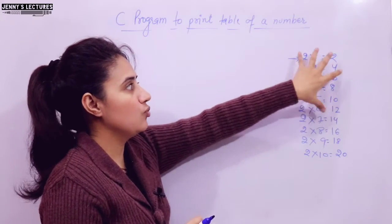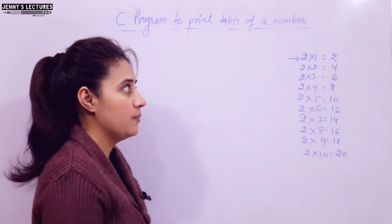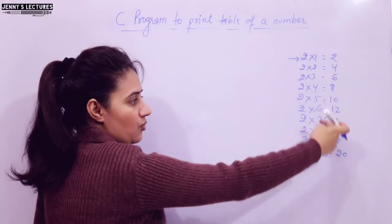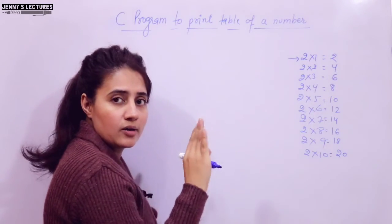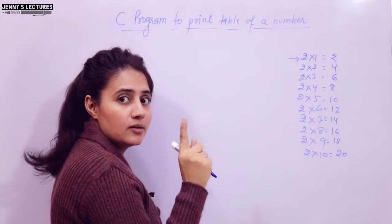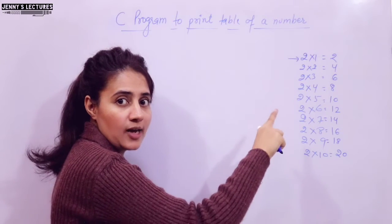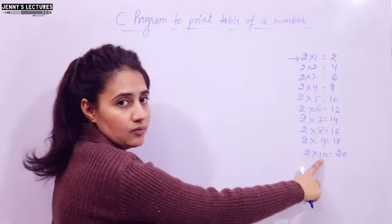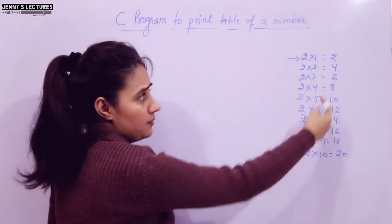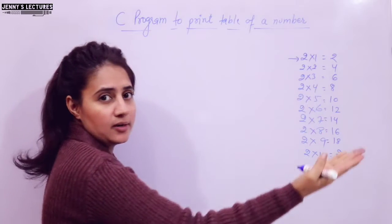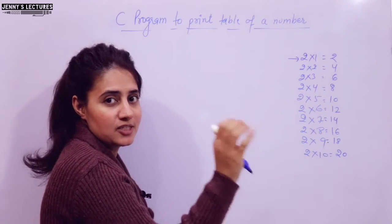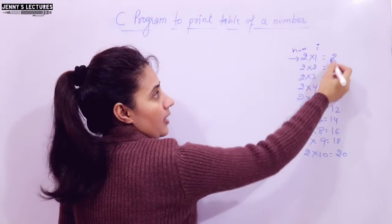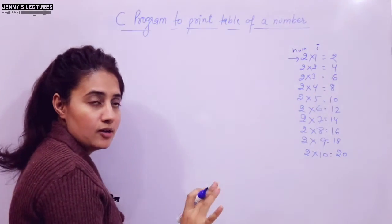You can print it as '2 into 1 is equal to 2', or just print 2, 4, 6 — the logic is to multiply the number with another number increasing from 1 to 10. You can use a loop where the loop starts from 1 and ends when the number becomes 10. I can put an increment condition — I++ — so variable i increases from 1 to 10 and you get the output.